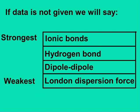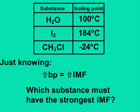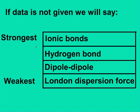But if you don't have data given, then we're going to say that ionic bonds are the strongest, then hydrogen bonds, dipole-dipole, and London dispersion forces are the weakest. This is not always true, as we saw in the last example — I2 is London dispersion forces, but it has a much higher boiling point than H2O's hydrogen bonds or CH3Cl's dipole-dipole attractions. But without looking up that information, this is the general guideline.